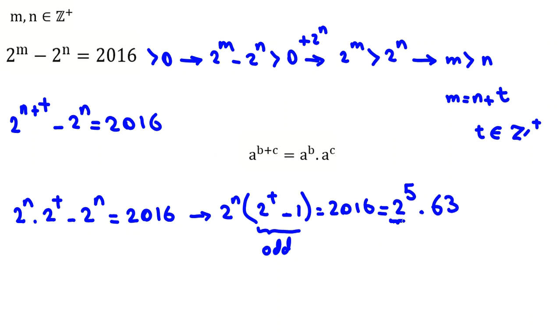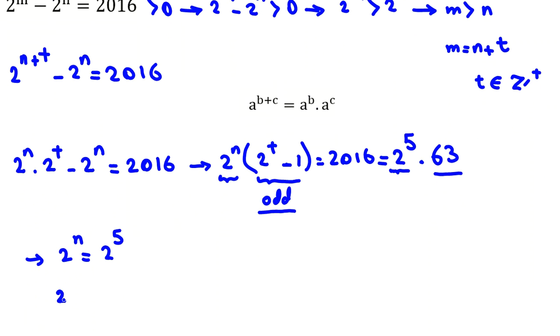Because this is the even part, this equals this, and this part equals this part. So we can write 2 to the n equals 2 to the 5, and 2 to the t minus 1 equals 63.